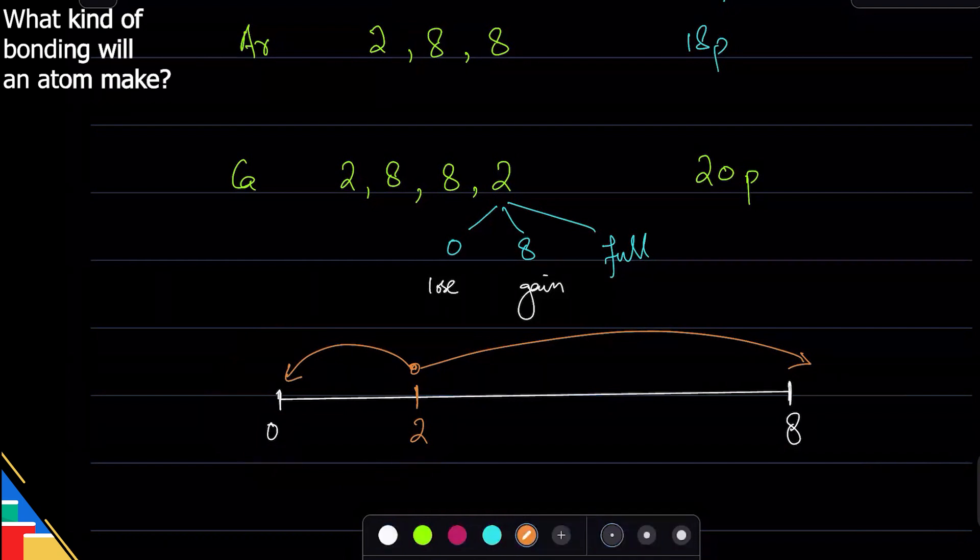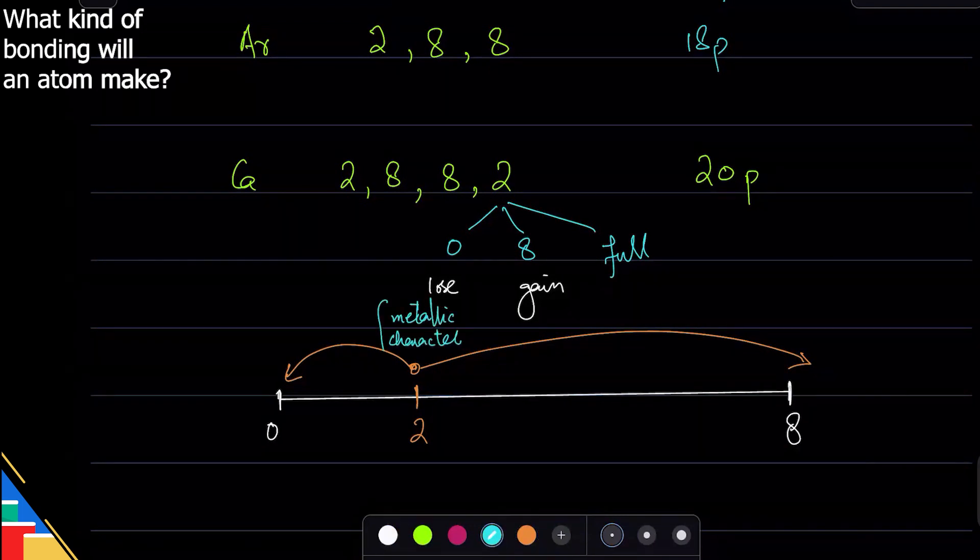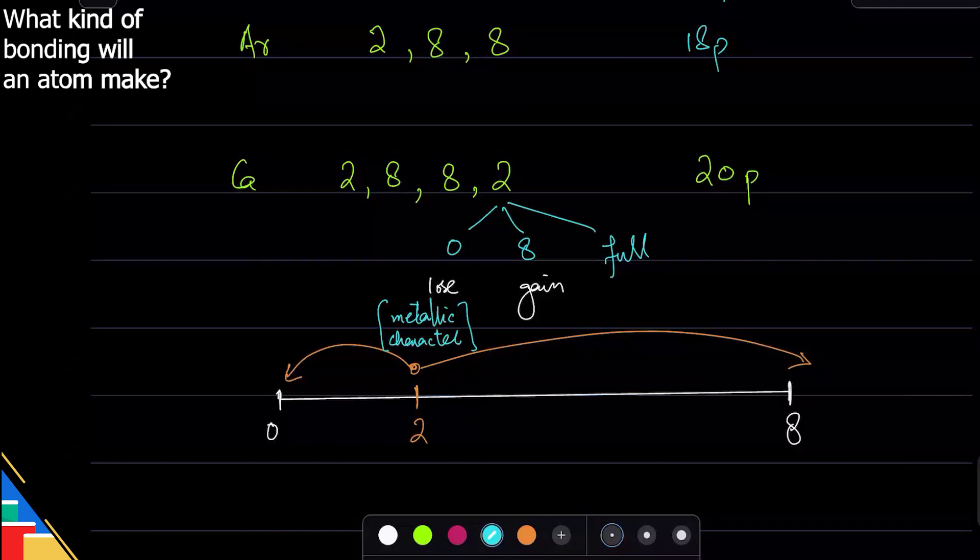Atoms that do that - that lose electrons - we say they have metallic character. If they lose electrons, that is called metallic character. If an atom loses electrons every time, we say it is a metal.